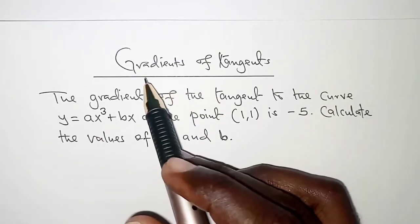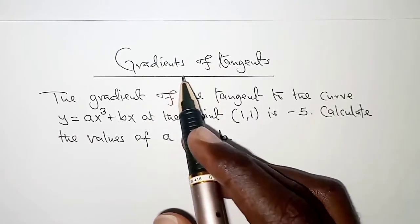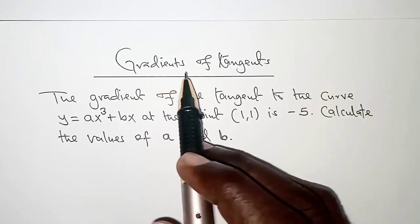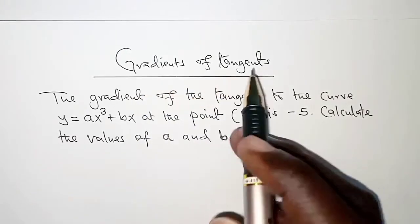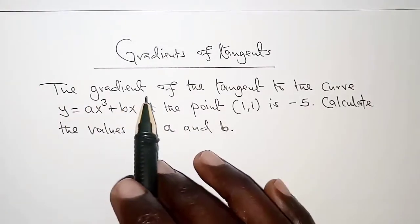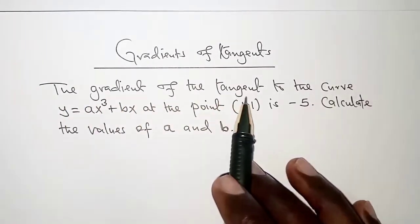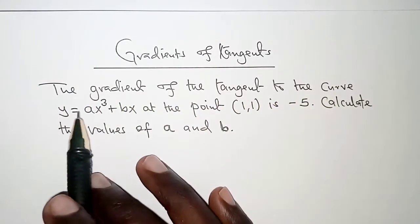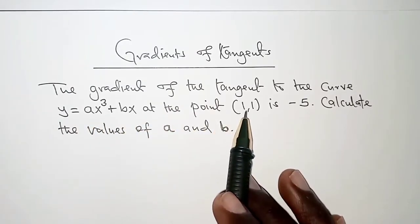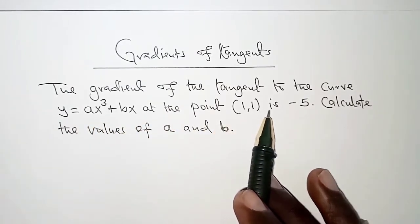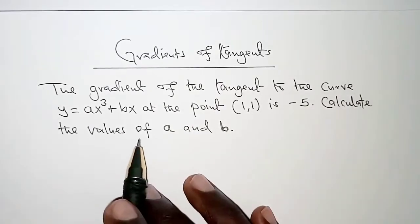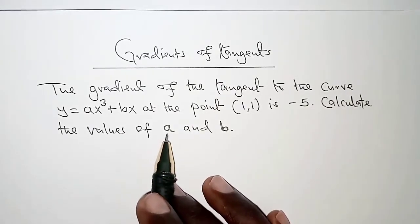Welcome to today's presentation. We are going to look at gradients of tangents. The question reads: the gradient of the tangent to the curve y is equal to ax cubed plus bx at the point 1 comma 1 is negative 5. Calculate the values of a and b.